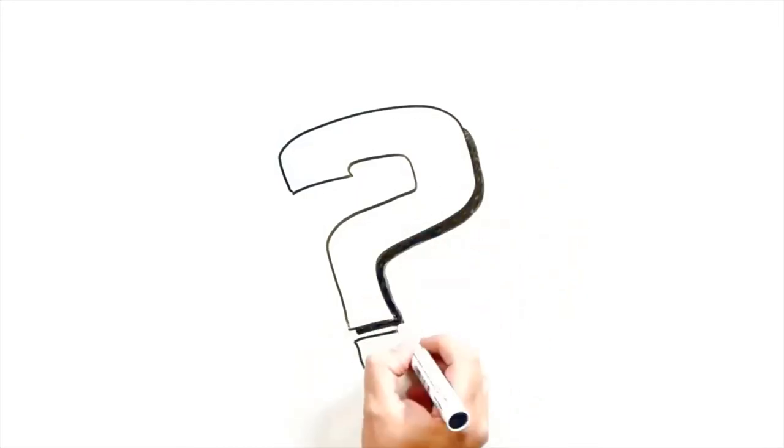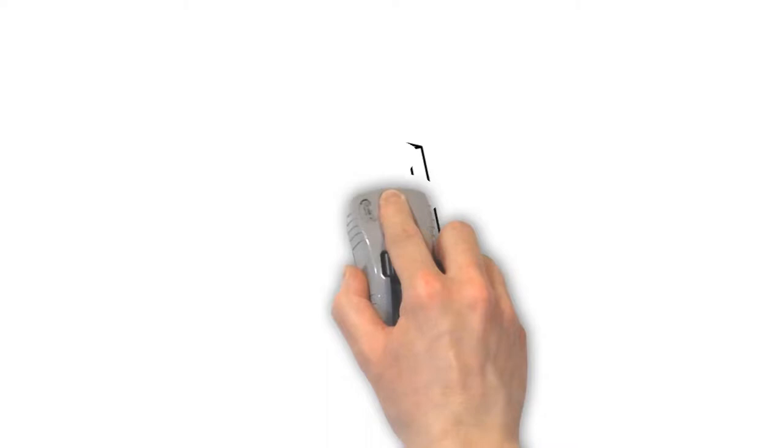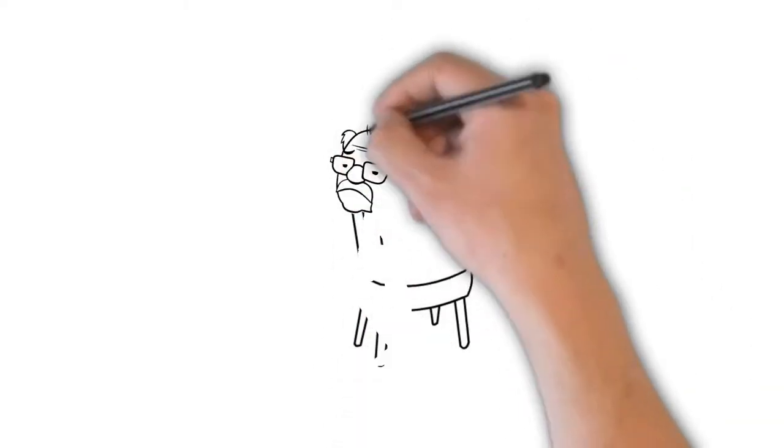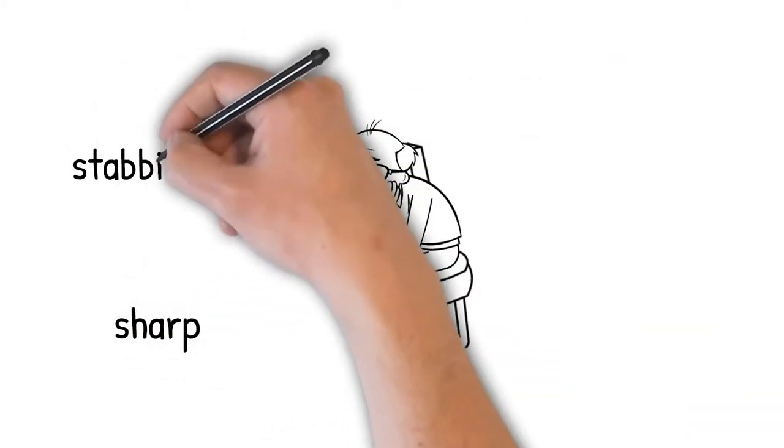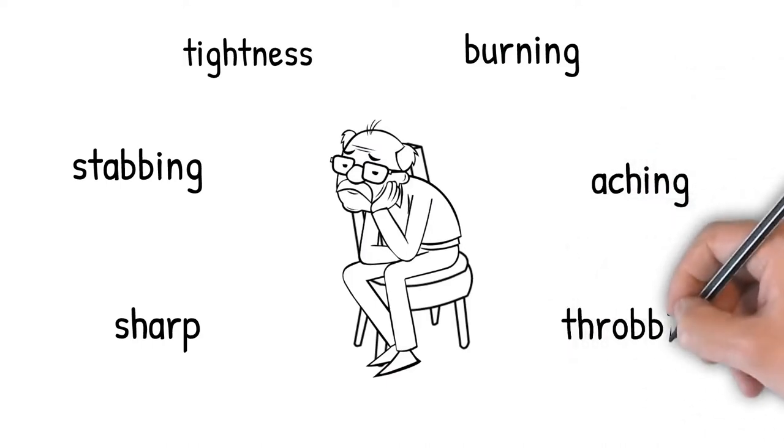This contrasts with chronic pain where the cause is often unknown or more complex. Pain can be described in many different ways for both acute and chronic pain, from sharp or stabbing to a tightness or burning sensation and aching or throbbing.